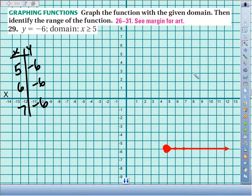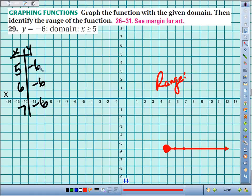There's our graph. Our range describes all the possible y values. Well, if you look at the y values here, negative 6, negative 6, negative 6, they never change.